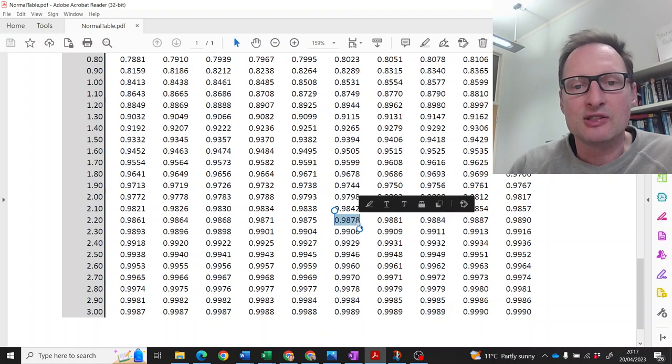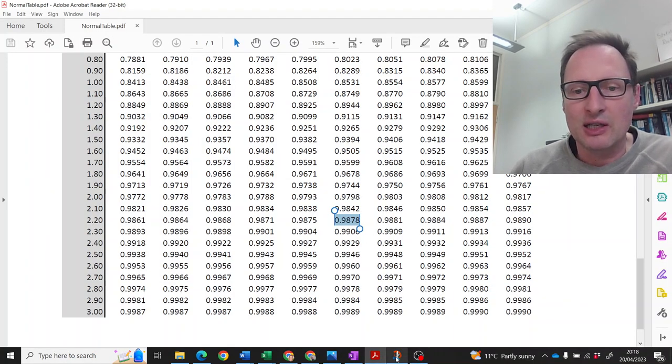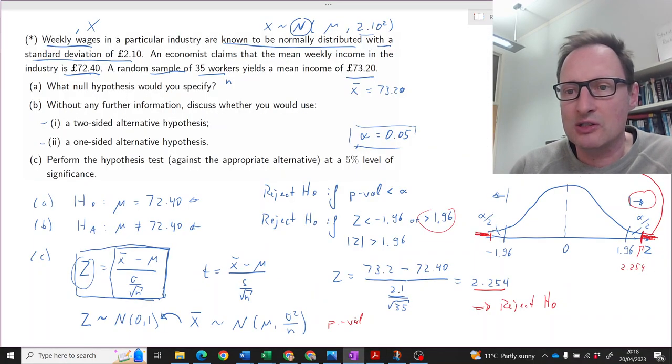That is the size of the area to the left of that. So what we have in here, the size of that area is going to be 1 minus 0.9878, which is 0.0122. So that's the size of this area.